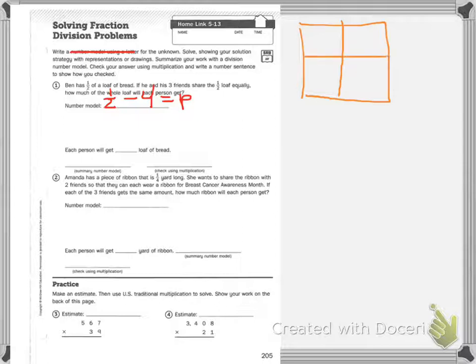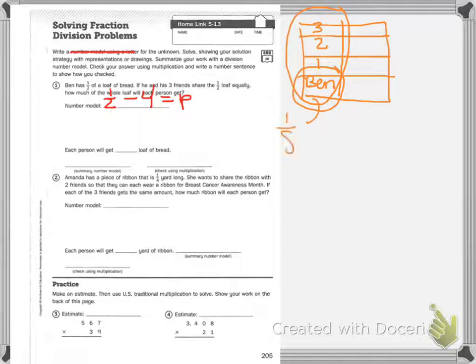Then I have four people. This is Ben, friend one, friend two, and friend three. How much would Ben get? One out of one, two, three, four, five, six, seven, eight. So that's one eighth. There's my drawing.